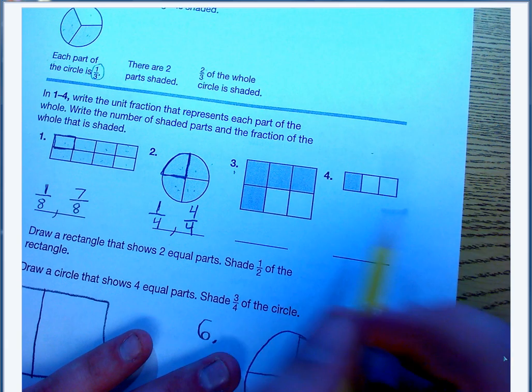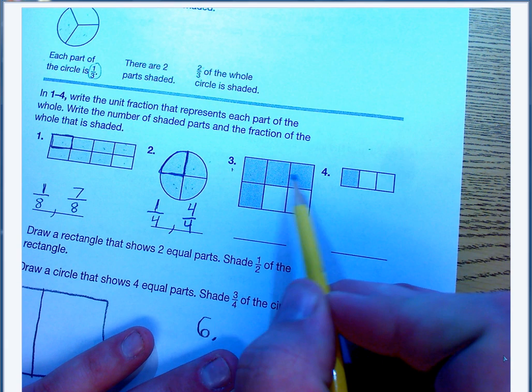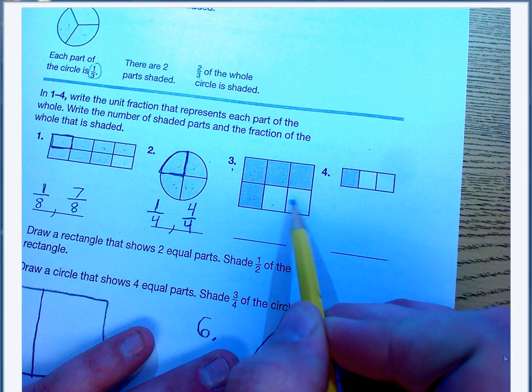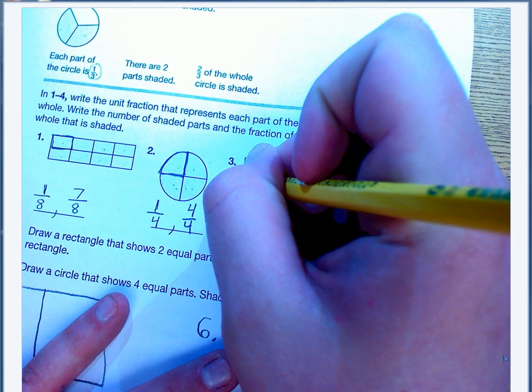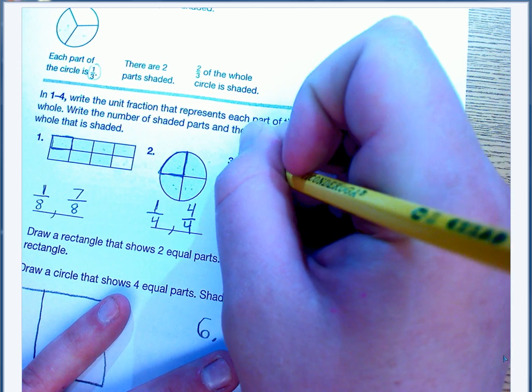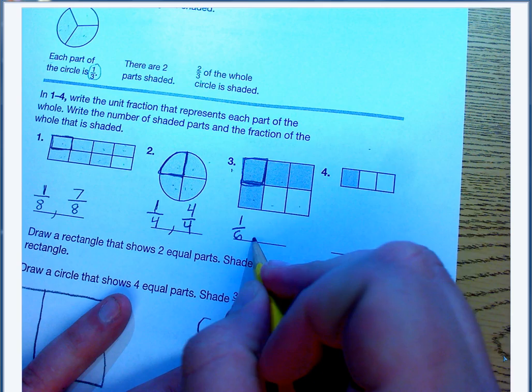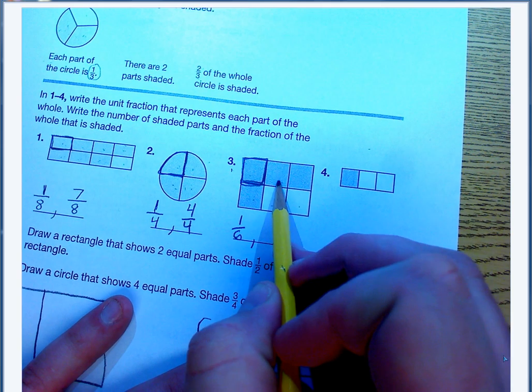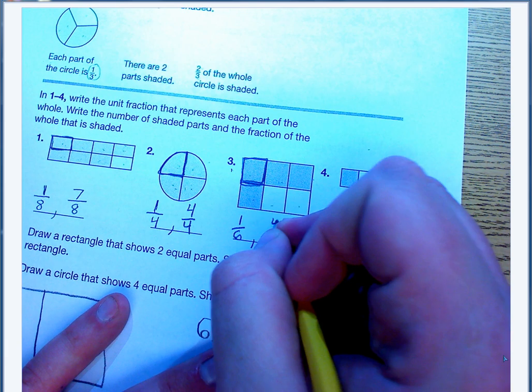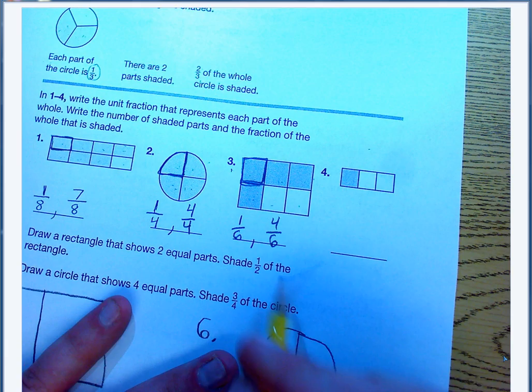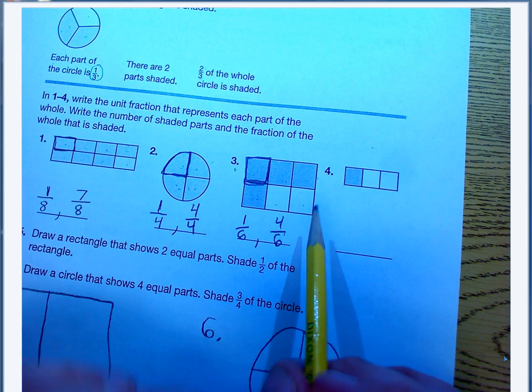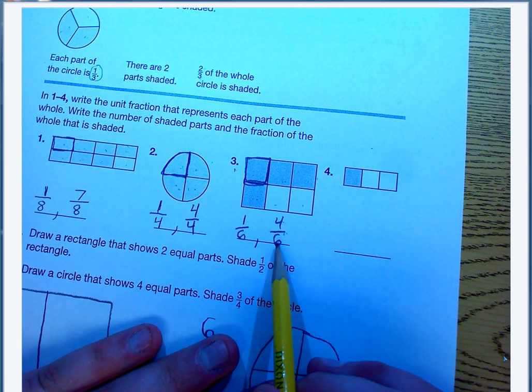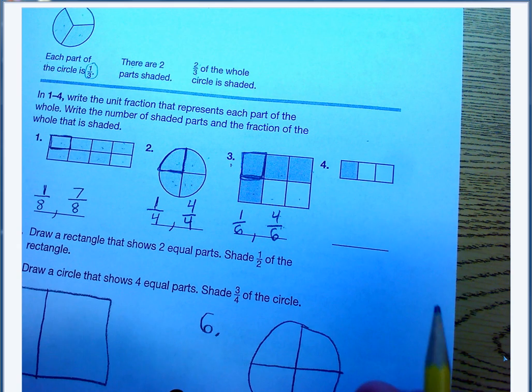Number three, how many equal parts do I have? One, two, three, four, five, six, so my unit fraction is one-sixth. One of these pieces is one-sixth, and the question is, how many are shaded? I have one, two, three, four are shaded out of six. When you see this fraction line, it's really easy to say out of, and it makes a little bit more sense. So four out of six are shaded, four-sixths.